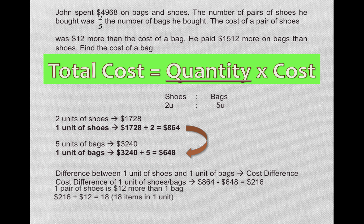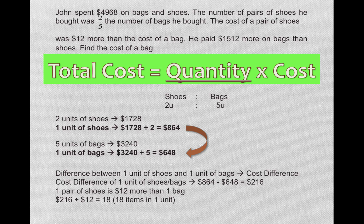We were told the cost of a pair of shoes was $12 more than the cost of a bag. If there are two pairs of shoes and two bags, there will be $24 difference. So how many items are there in one unit? Simple number sentence: $216 divided by 12 equals 18. So there are 18 items in one unit.